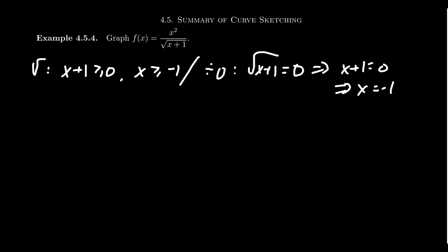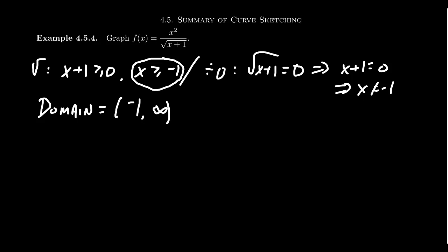Earlier we said x should be greater than or equal to negative 1, but because of division by zero, we actually don't want it to equal negative 1. So the domain of this function is negative 1 to infinity, where negative 1 is not included. Right off the bat, since the domain is negative 1 to infinity, we can say there's no symmetry here — you can't be even or odd if your domain isn't symmetric, so I'm not going to bother calculating it.